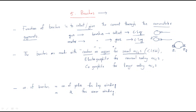Copper brushes are used only for machines less than one kilowatt. The next type is electro-graphite, used for normal rating machines. Copper-graphite is another material useful for large rating machines.